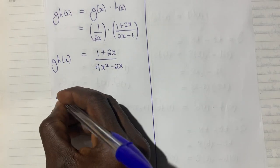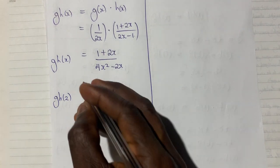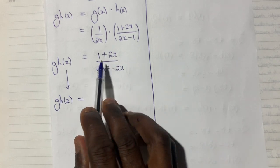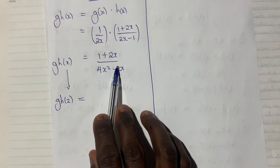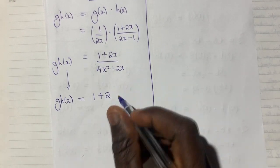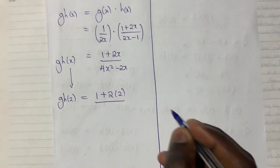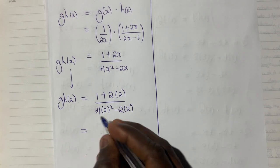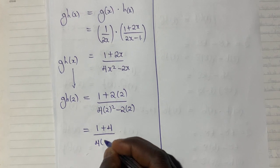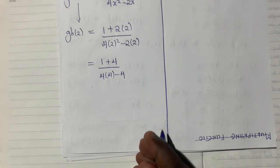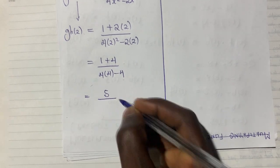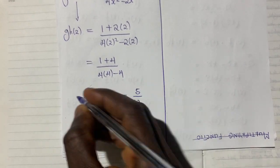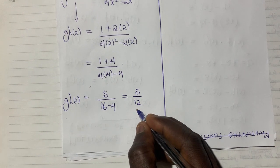Now we find G·H(2) by replacing x with 2. We get (1 + 2·2) / (4·2² − 2·2) = (1 + 4) / (16 − 4) = 5/12. So G·H(2) = 5/12.